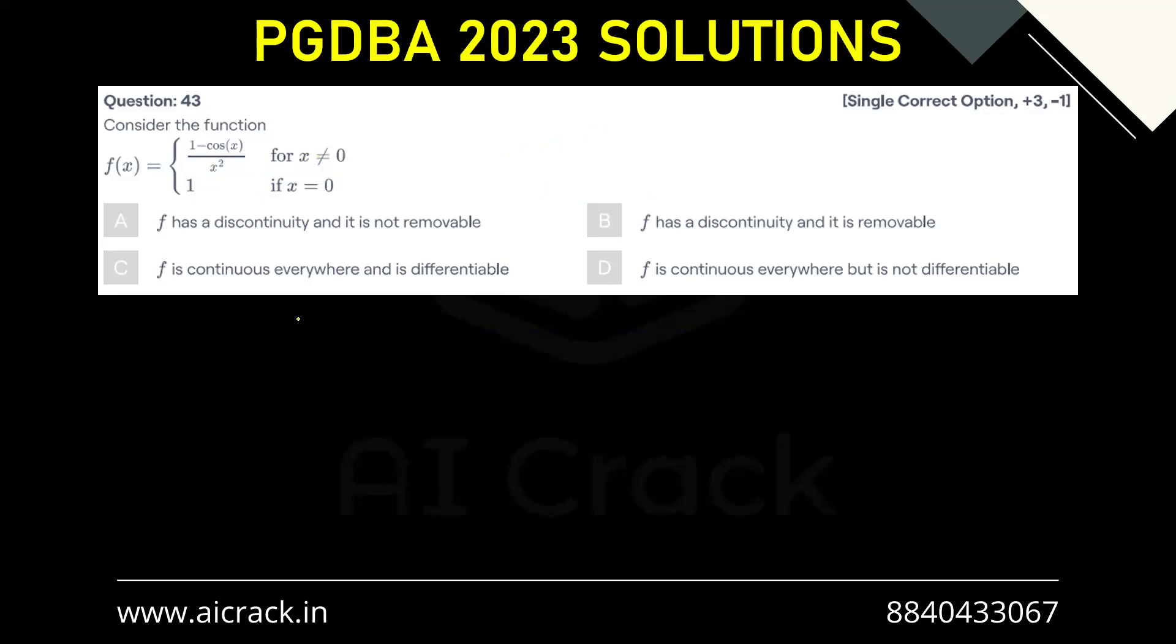Now for continuity, we know that f(0) should equal LHL should equal RHL. You can see that f(0) equals 1 because of this.